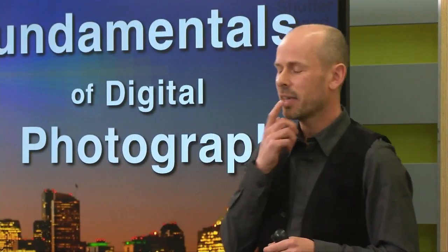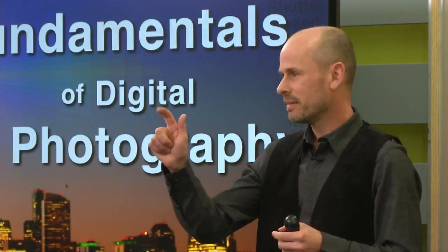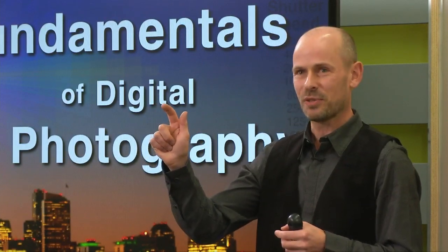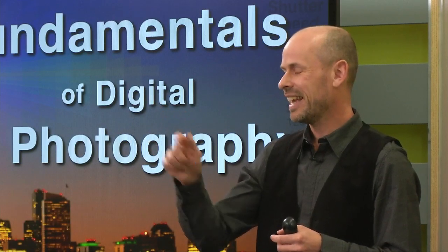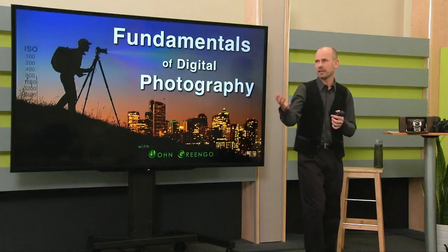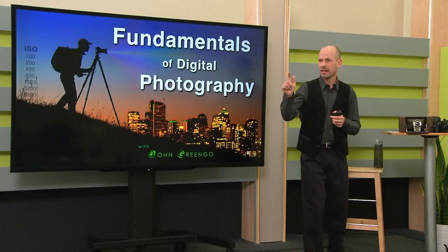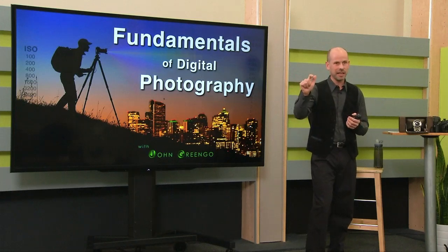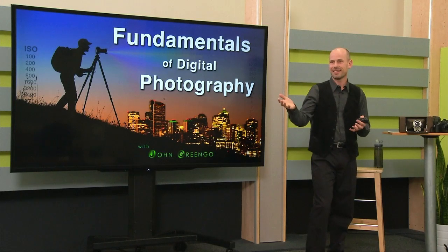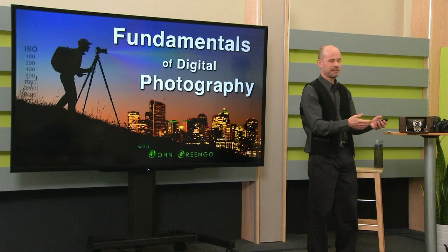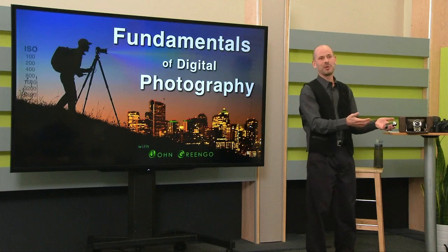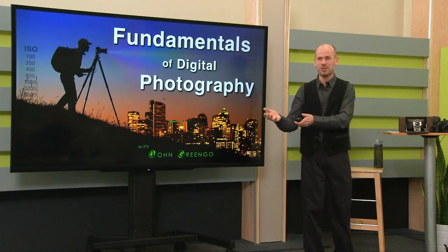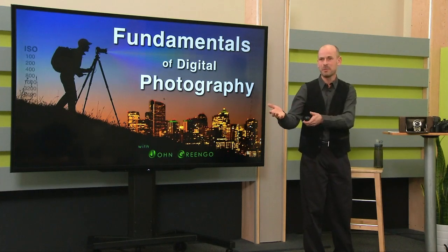When you look at a good photograph, you might think they just went click — that's the only qualification for being a photographer, right? You look at a good photograph and think that's good, and all the photographer did was click. That must be easy. But then you go out and shoot pictures and your pictures are terrible. It seems so easy to get good results for other people. Why is it so difficult for me?